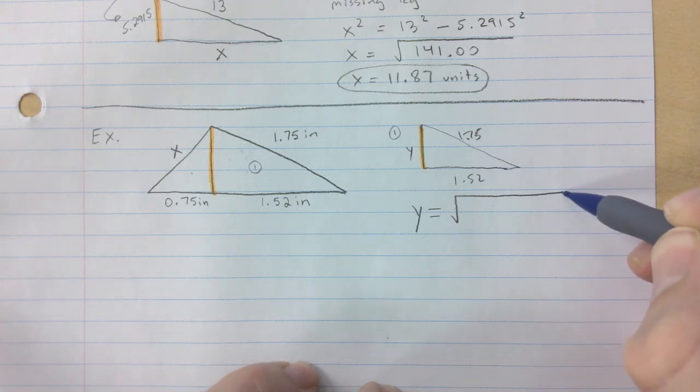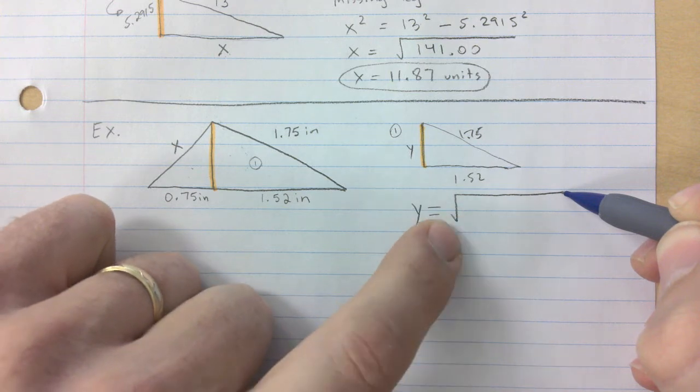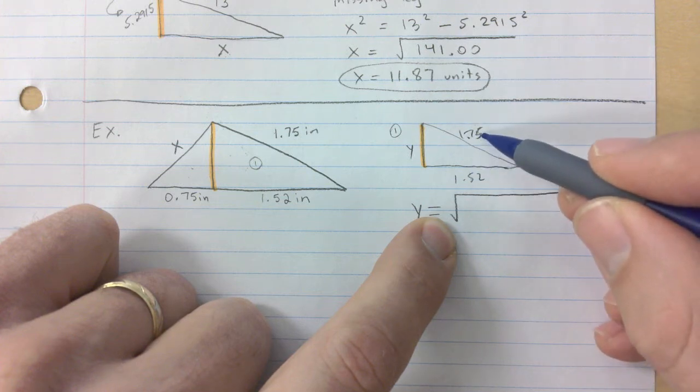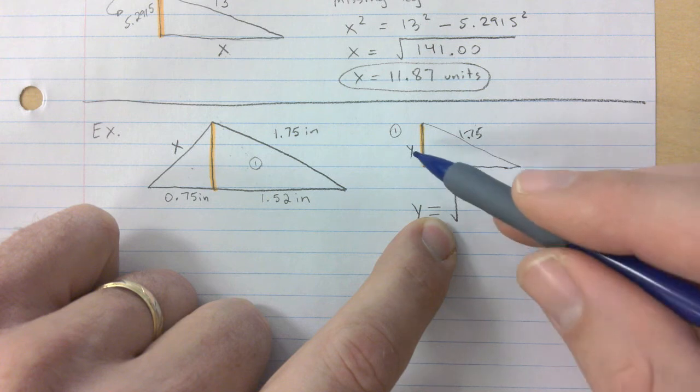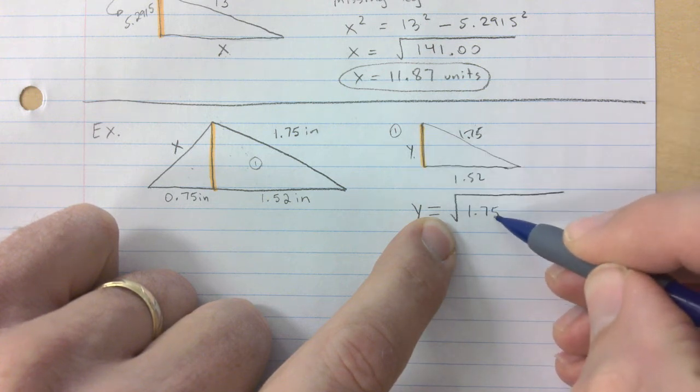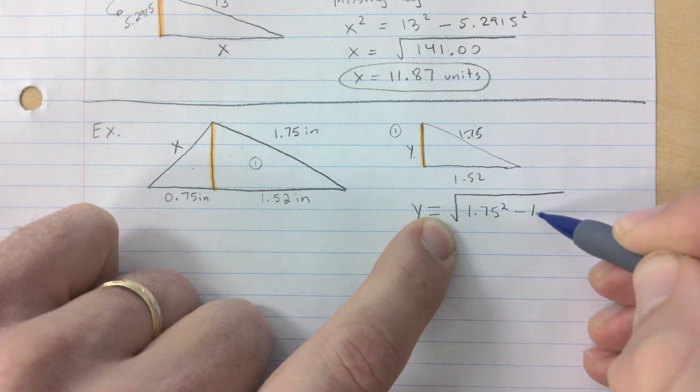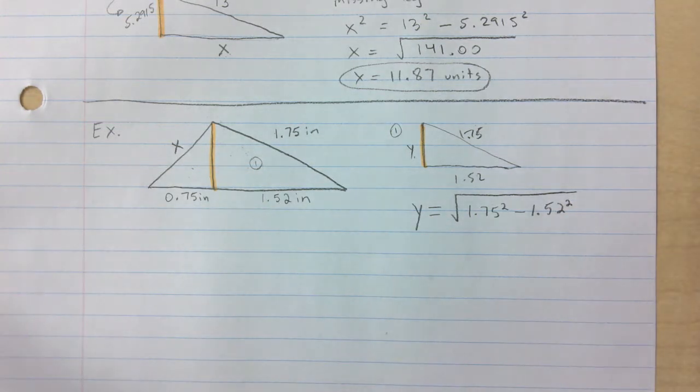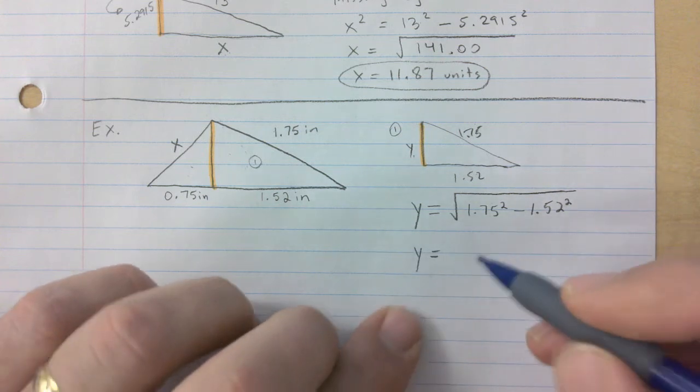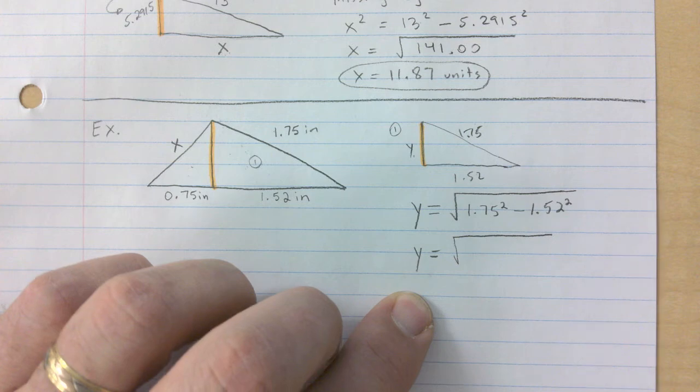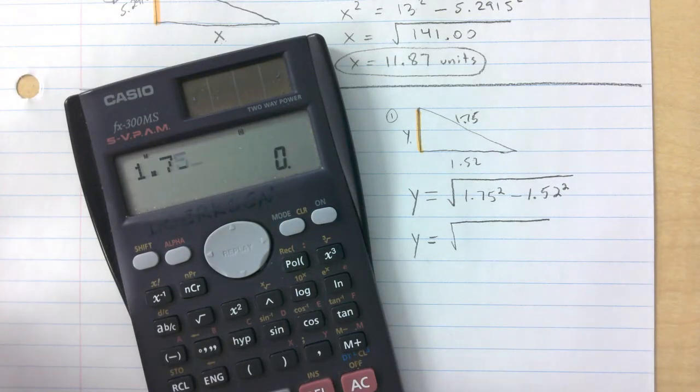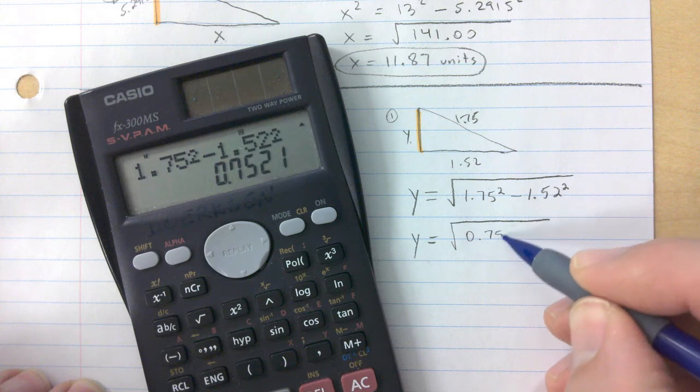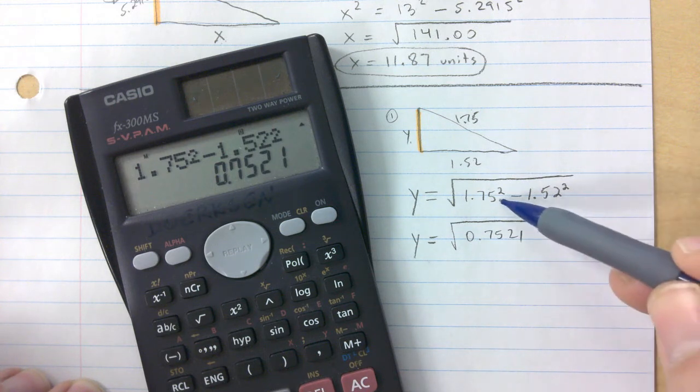You're gonna have to square root no matter what at the end. Now the question is, are you gonna add or subtract? You're gonna subtract because you're missing a leg. So it's 1.75 squared minus 1.52 squared. Here I would urge you to be very careful. Watch what I'm gonna do. I'm just gonna take square root and figure out what this is. 1.75 squared minus 1.52 squared is 0.7521.